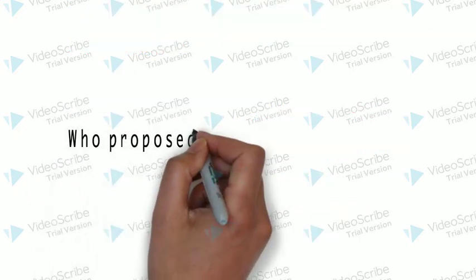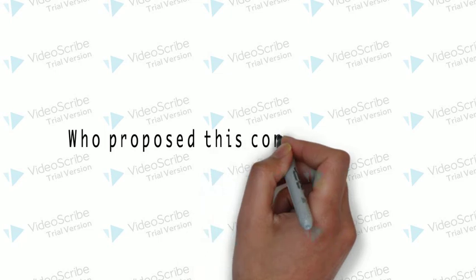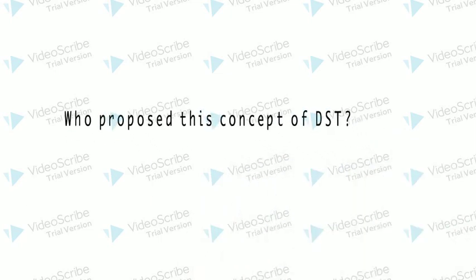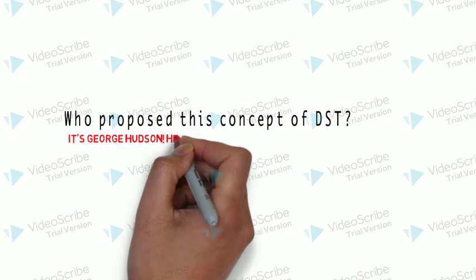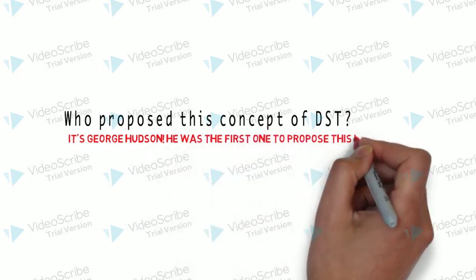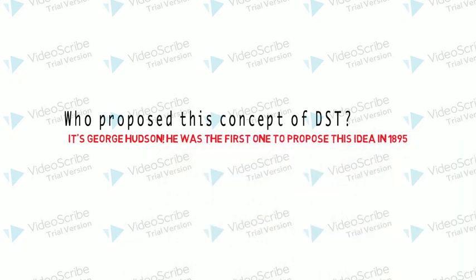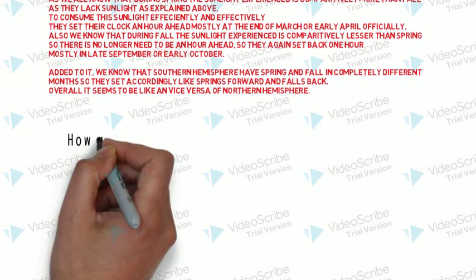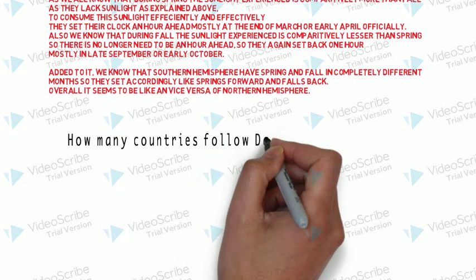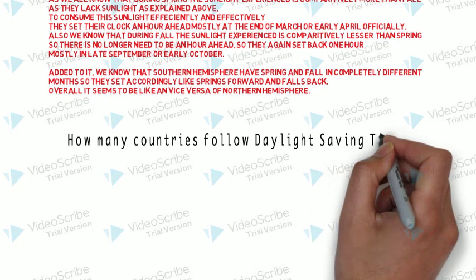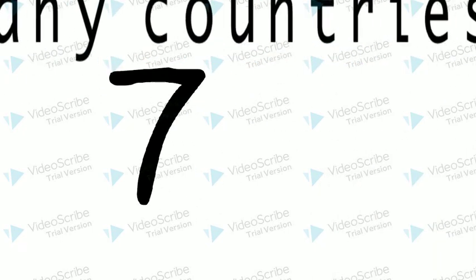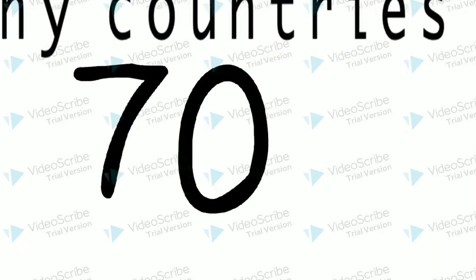Here are some details about the proposal of this concept. George Hudson was the first one to propose it. Now let's see how many countries follow DST around our world — it's exactly 70 countries.